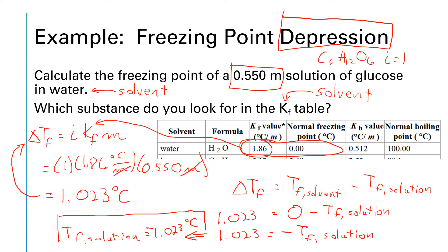So the freezing point was lowered from 0 degrees C for pure water to negative 1.023 degrees C for this 0.550 molal solution of glucose.